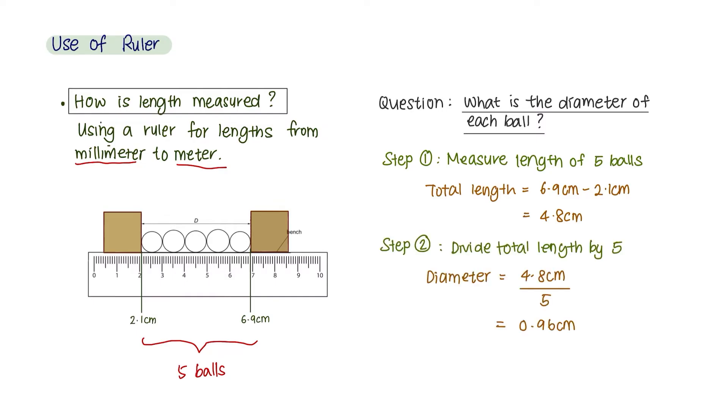And step 2 would be to divide the total length difference by 5, giving you 0.96 cm. When measuring small lengths, the unit that we would use is centimeters.